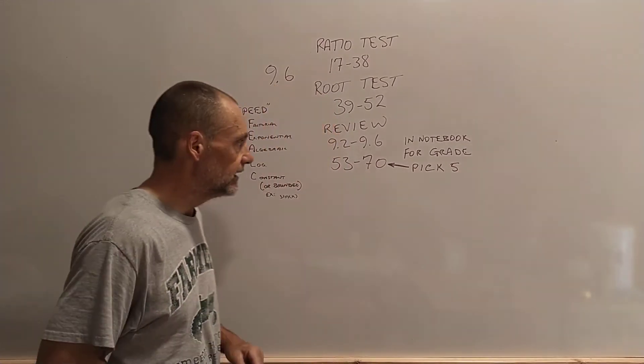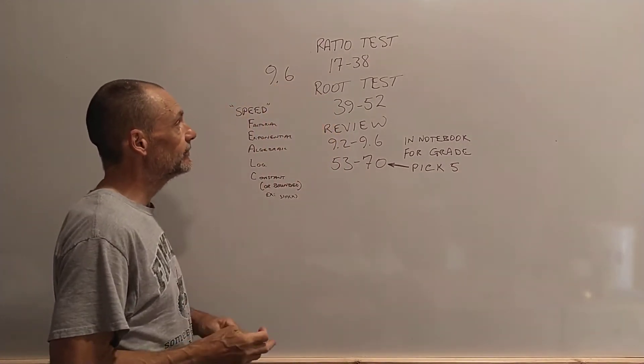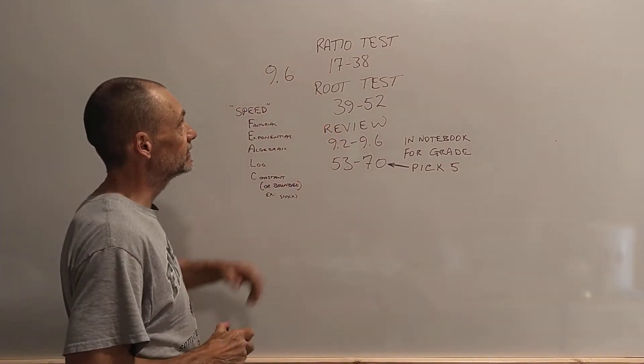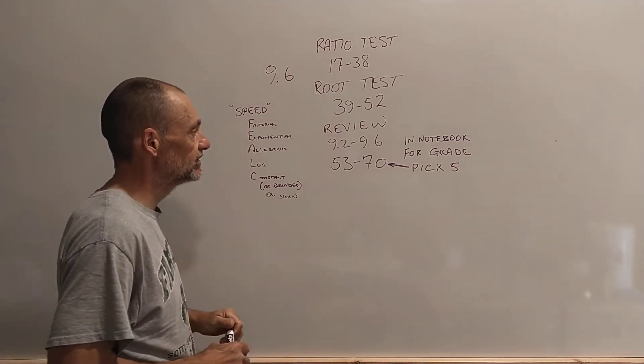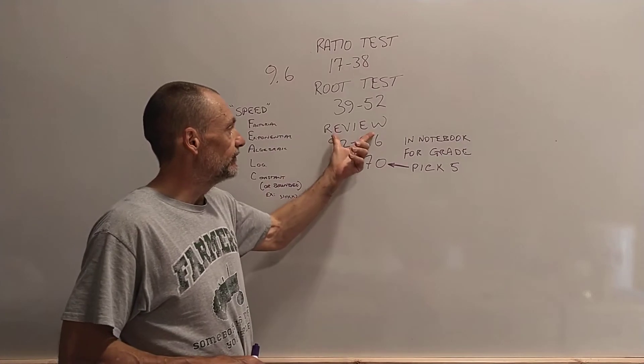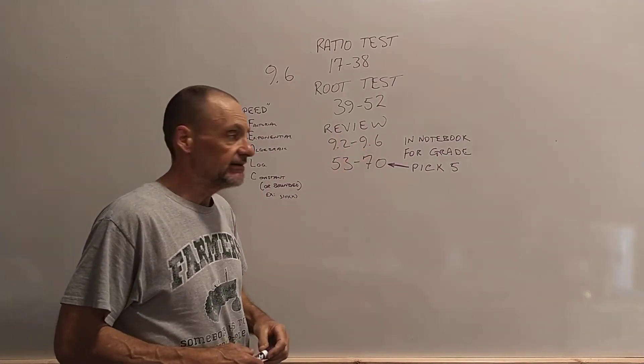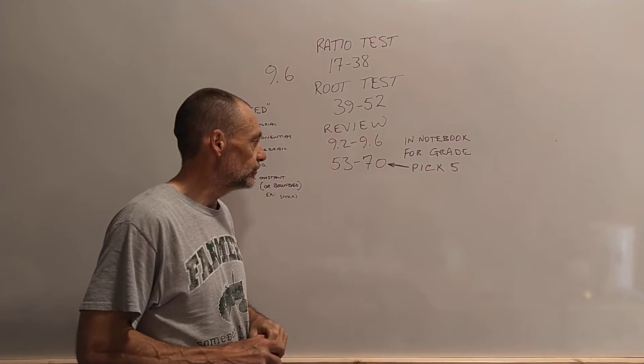So for the Calculus II class, this is the relevant, the pertinent information about 9.6. It's about the ratio test of these problems and the root test, we have these problems. After that, there's a review of 9.2 to 9.6, and that's where we find these 53 to 70 problems.